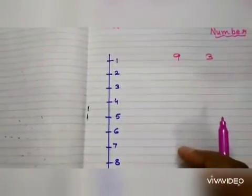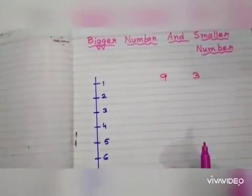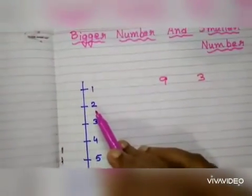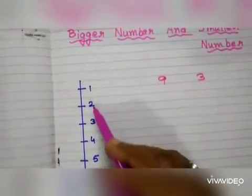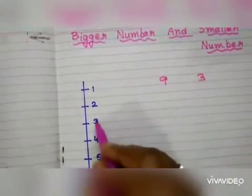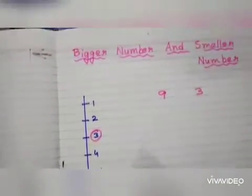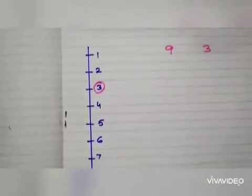Children, can you tell me which number is the bigger number? Just by the help of number line we can see. 1, 2, 3. Yes. Circle the number 3. Then 4, 5, 6, 7, 8, 9.